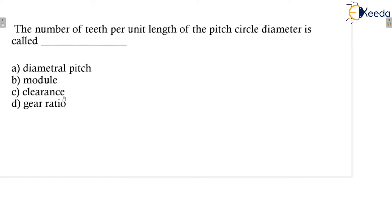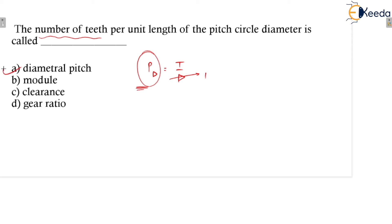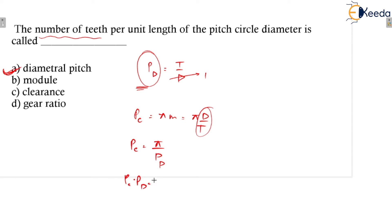The next question: the number of teeth per unit length of the pitch circle diameter. This is a simple formula-based question. The diametrical pitch PD equals T divided by D. When the pitch circle diameter equals 1, you get the number of teeth per unit length of the pitch circle diameter, which equals the diametrical pitch. Option A is the correct answer. Also, the relation between circular pitch and diametrical pitch is: PC times PD equals pi.